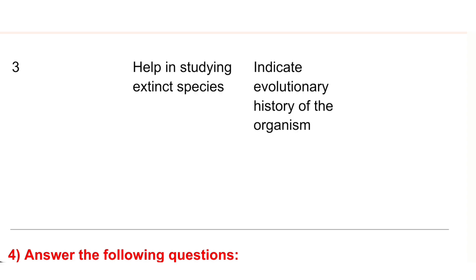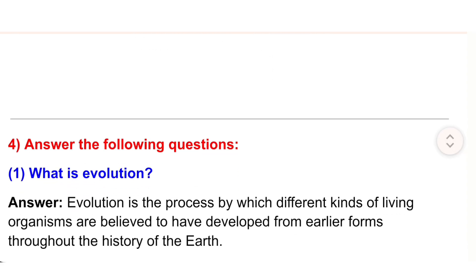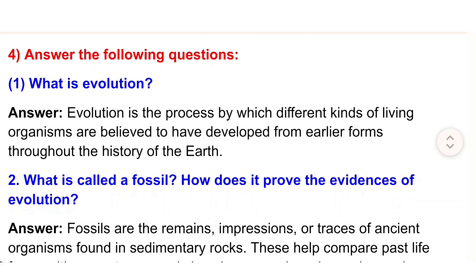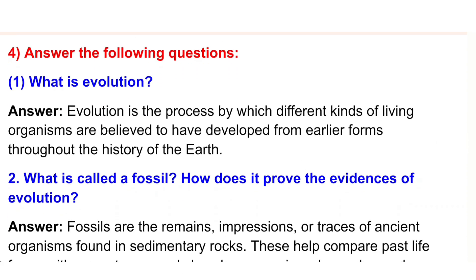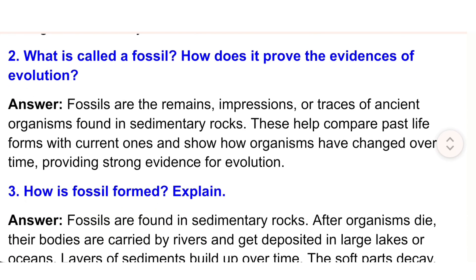Answer the following questions. 1) What is evolution? Answer: Evolution is the process by which different kinds of living organisms are believed to have developed from earlier forms throughout the history of the earth. 2) What is called a fossil? How does it prove the evidence of evolution?